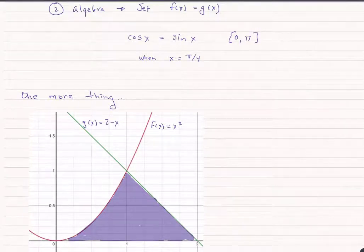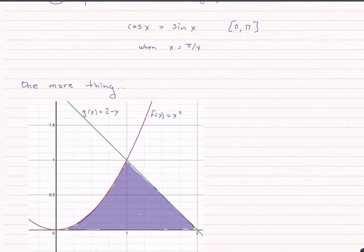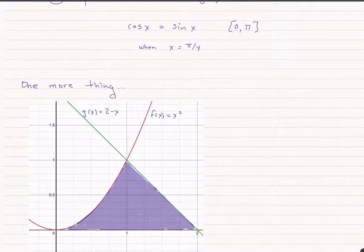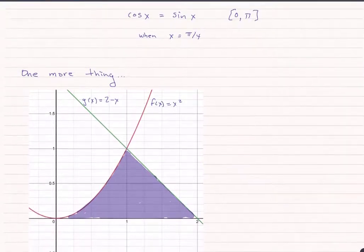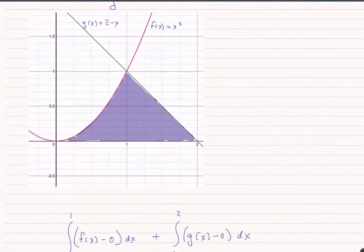What do we do with something like this? The graphs cross, and I could find out where they cross by setting them equal to each other. But if I look at from zero to one, I see f of x is on top, but this doesn't quite work the way it did before. It's from f of x to what? Well, actually, it's just f of x to zero.